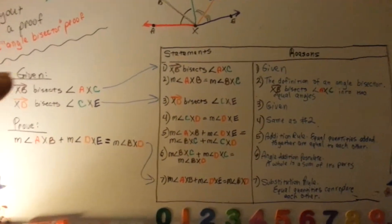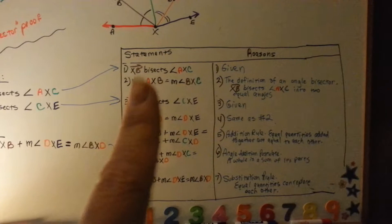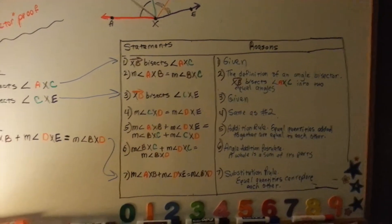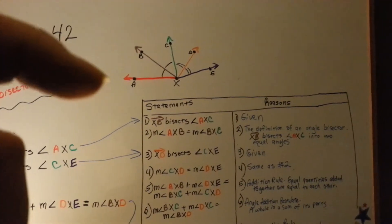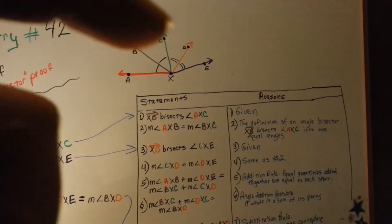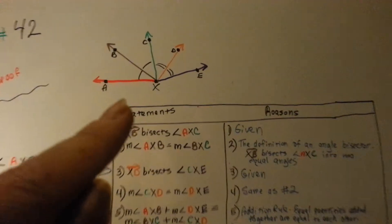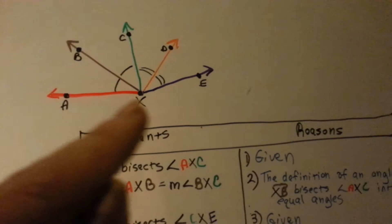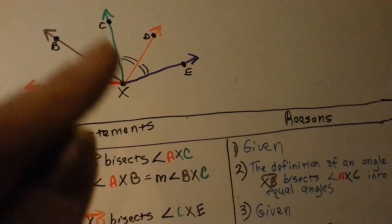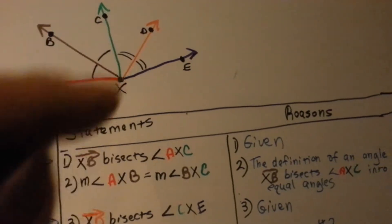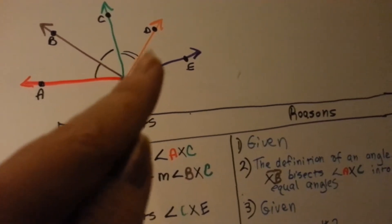Let's look at what we've got here overall. We've got our given and what we need to prove. We've got our proof table with our statements on the left and our reasons on the right. We have a, b, c, d, and e at the vertex x, and it looks like the angle axb and the angle bxc are congruent, and cxd and dxe are congruent — you can tell by those tick marks there.